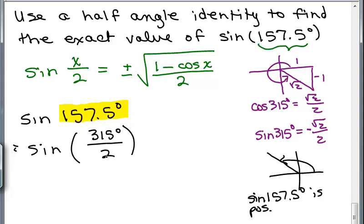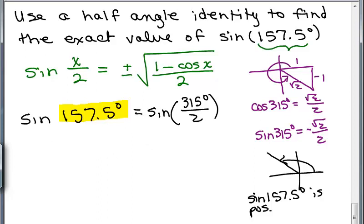We have sine of 315 degrees over 2. I see I'm going to run out of space here, so I'm going to write that up here instead. I'm just writing this as 315 degrees over 2, so I have a little more space for the formula. According to this formula, we're going to use the positive sign. You don't have to put a plus sign because if you don't write anything, we assume it's positive. The formula says 1 minus the cosine of X. Replacing X with 315 degrees, we have cosine of 315 degrees.